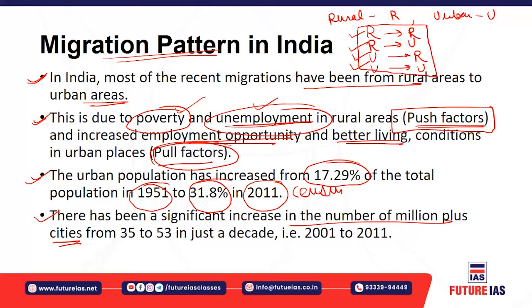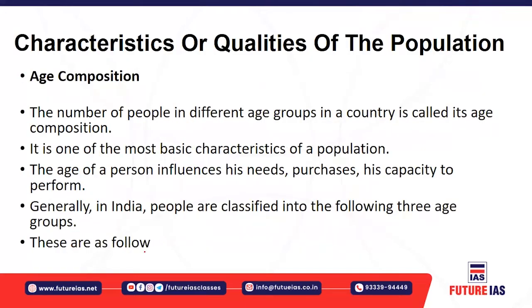This rural-to-urban migration has led to the growth of million-plus cities — that is, cities with a population of 10 lakh or more. For example, in 2001 the number of million-plus cities was 35, but in 2011 it increased to 53, an increase of around 18 such cities, due to the drastic changes in population because of rural-to-urban migration.